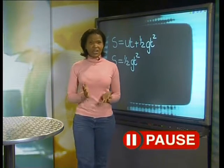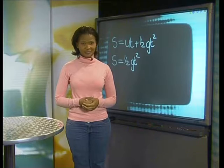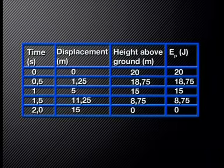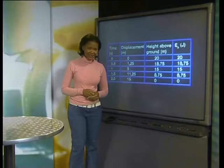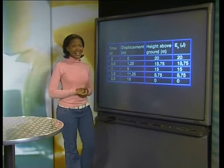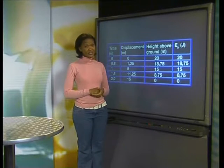Can you fill in the displacement, the height, and the gravitational potential energy values for the ball's fall? Let's analyze the completed table of values together. Notice, after 0.5 seconds, the ball has fallen 1.25 meters. It is now 18.75 meters above the ground, so has 18.75 joules of gravitational potential energy. After one second, the ball has fallen 5 meters downwards. It is now 15 meters above the ground and has a gravitational potential energy of 15 joules.